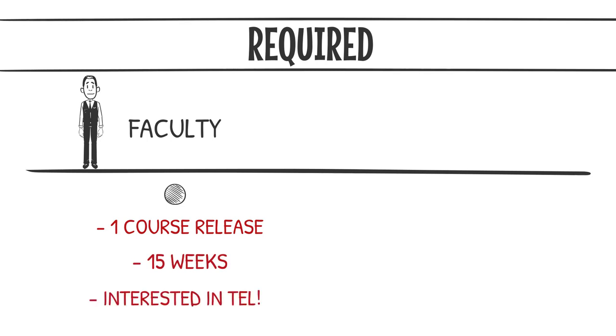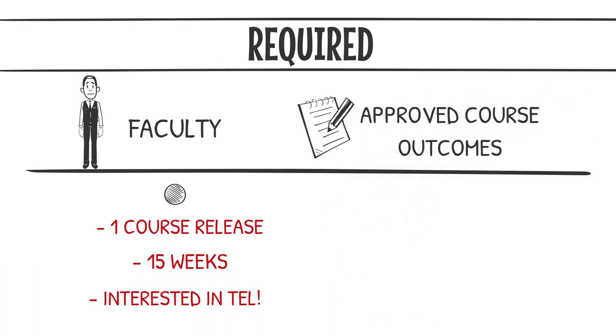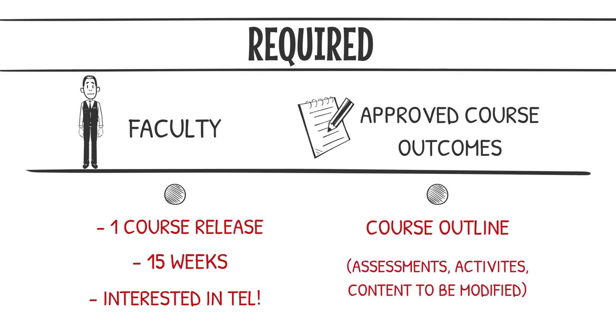The second is an approved set of course learning outcomes. These are usually bundled with an existing course outline. In most cases the assessments and weekly materials in the existing outline are overhauled for the online version and submitted to the chair for their approval.